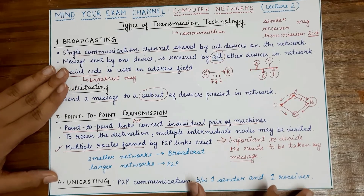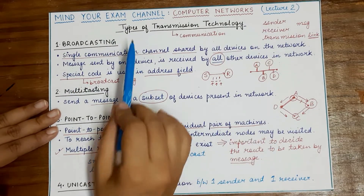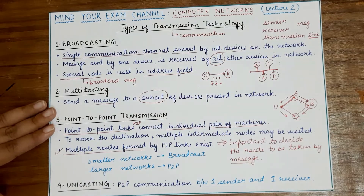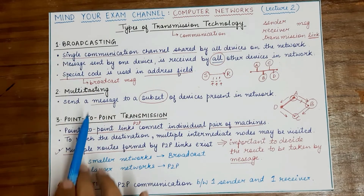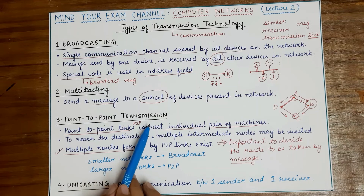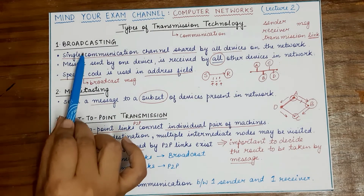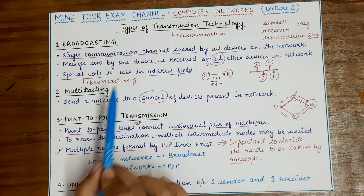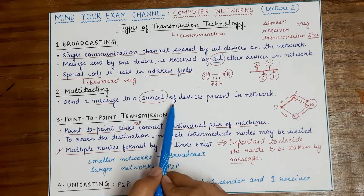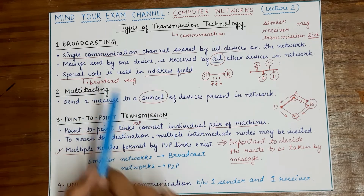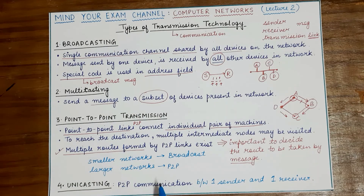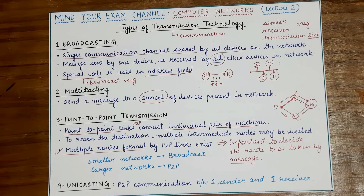This was all for today's lecture. We studied about different types of transmission technologies. The two main categories are broadcasting and point-to-point communication. Broadcasting, when done for a subset of devices and not all of them, is referred to as multicasting. When point-to-point communication takes place between one sender and one receiver, it is referred to as unicasting. In the next video, we'll understand how to classify different networks on the basis of their physical size or scale.